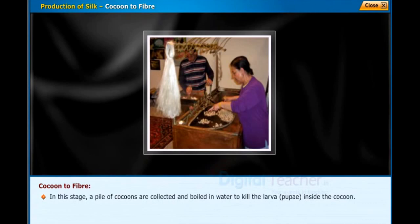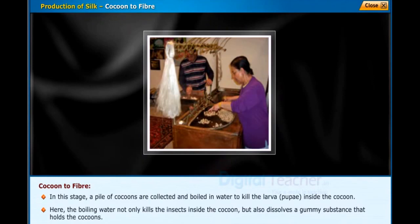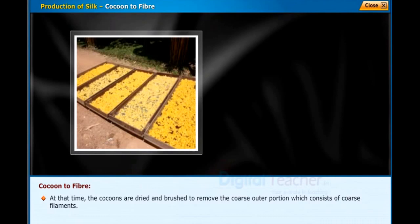In the cocoon to fiber stage, a pile of cocoons are collected and boiled in water to kill the larvae or pupae inside. The boiling water not only kills the insects inside the cocoon but also dissolves the gummy substance that holds the cocoon together. The cocoons are then dried and brushed to remove the coarse outer portion, which consists of coarse filaments.